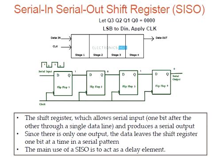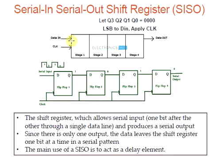In a Serial In Serial Out register, the clock signal is connected to all the flip-flops. The serial data is connected to the leftmost flip-flop, the output of the first flip-flop is connected to the input of the next flip-flop, and so on, and the final output of the register is collected from the outermost flip-flop. For the first clock pulse, the least significant bit is given to the data input, and for the next clock pulse the second digit will be given to D-in.